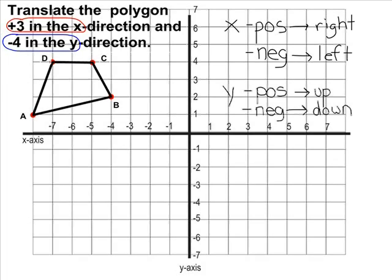And in the y direction, this always means to move it either up or down. A negative number means we have to move our object down. A positive number means we have to move it up in the y direction. In this case, we are going to move our polygon 3 units to the right and 4 units down.